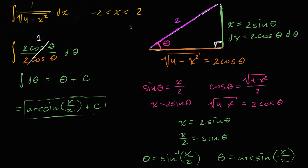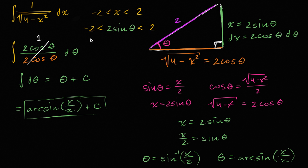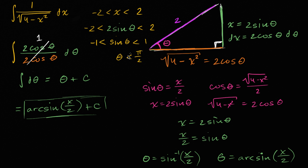Let's make sure our substitution didn't do anything strange to the domain. Since x must be between negative two and two and x equals two sine theta, we need negative two less than two sine theta less than two, which divides to negative one less than sine theta less than one. This holds when theta is greater than negative π/2 and less than π/2 — which is exactly the standard range for the arcsine function.